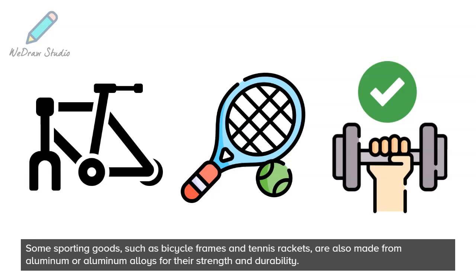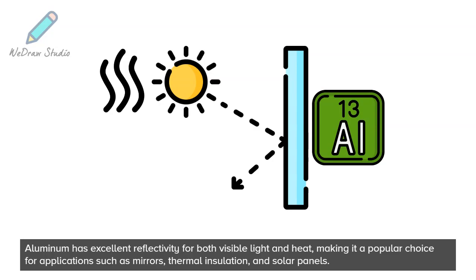Aluminum has excellent reflectivity for both visible light and heat, making it a popular choice for applications such as mirrors, thermal insulation, and solar panels.